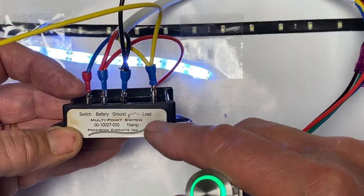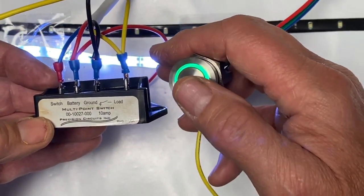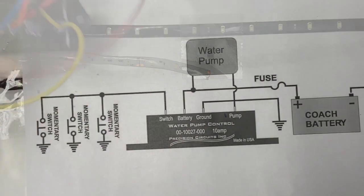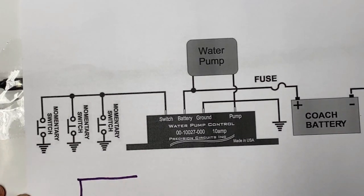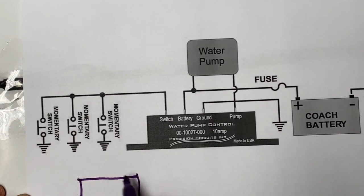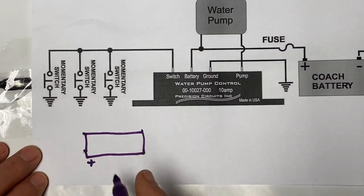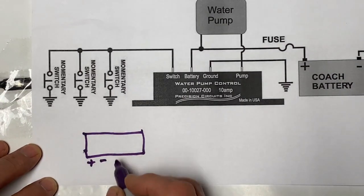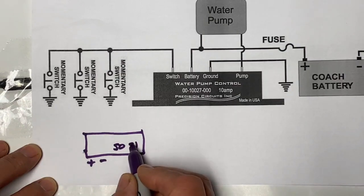Think of the timer as nothing more than another switch that gets energized when the load is energized. When we wire in this timer, we are going to treat the timer like a momentary switch. The timer has a positive for power, a negative to power the unit. It has an S0 and an S1. All this is is a relay.